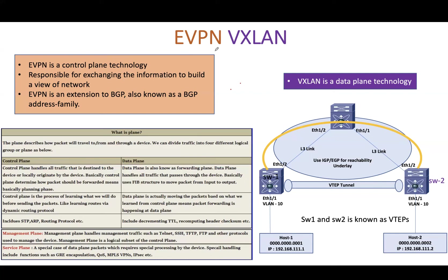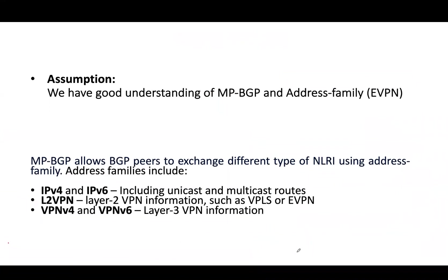We have different ways to discover VTAPs, like flood-and-learn and EVPN. In this session we are going to focus on EVPN. EVPN uses MP-BGP to exchange Layer 2 and Layer 3 information. I am assuming that you have a good understanding of MP-BGP and address families. Address families allow us to exchange different types of route information like IPv4, IPv6, and VPNv4. Similarly, we have a new sub-address family called EVPN that allows us to exchange EVPN routes.